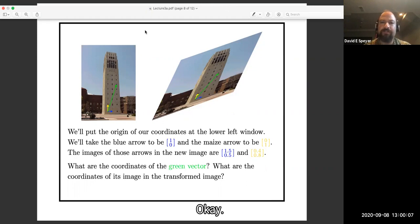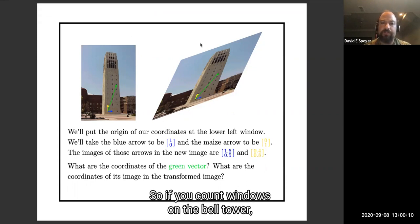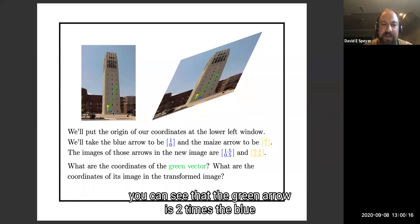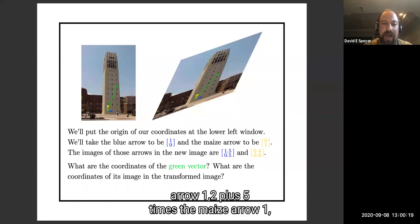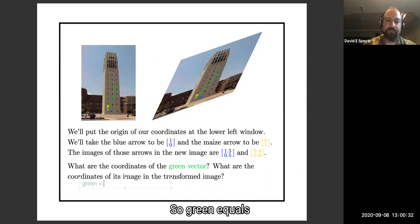If you count windows on the bell tower, you can see that the green arrow is 2 times the blue arrow, 1, 2, plus 5 times the maize arrow, 1, 2, 3, 4, 5. So green equals 2 times blue plus 5 times maize.